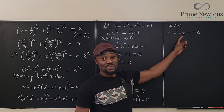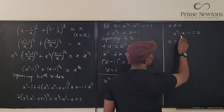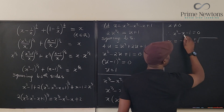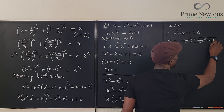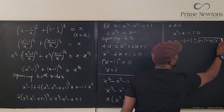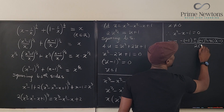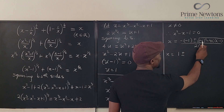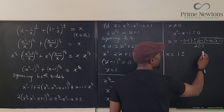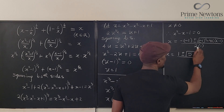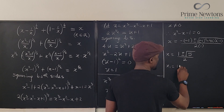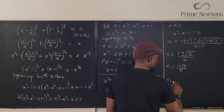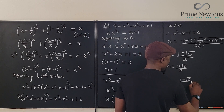The only remaining option is x² - x - 1 = 0. This doesn't factor nicely, so I'll use the quadratic formula: x = (1 ± √(1 + 4)) / 2 = (1 ± √5) / 2. That gives x₁ = (1 + √5) / 2 or x₂ = (1 - √5) / 2.